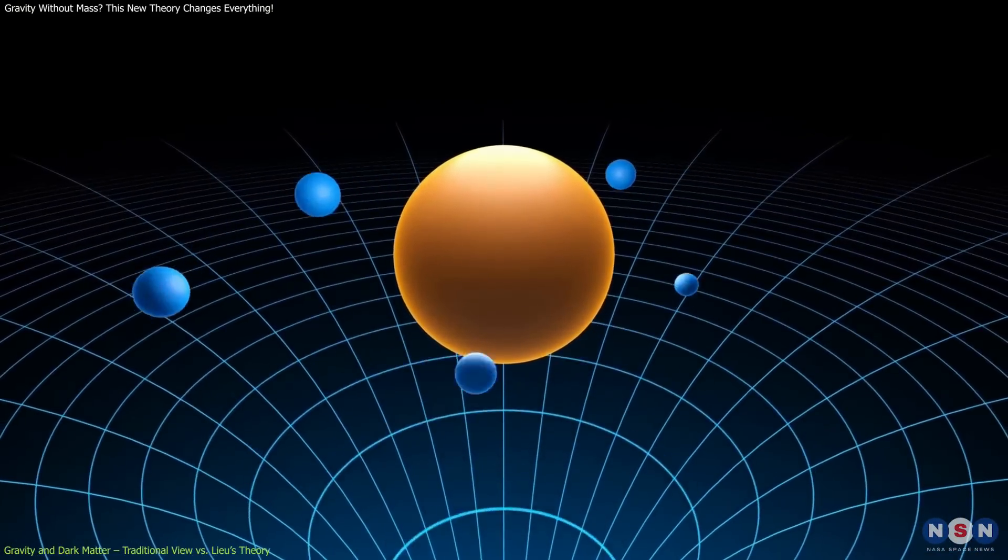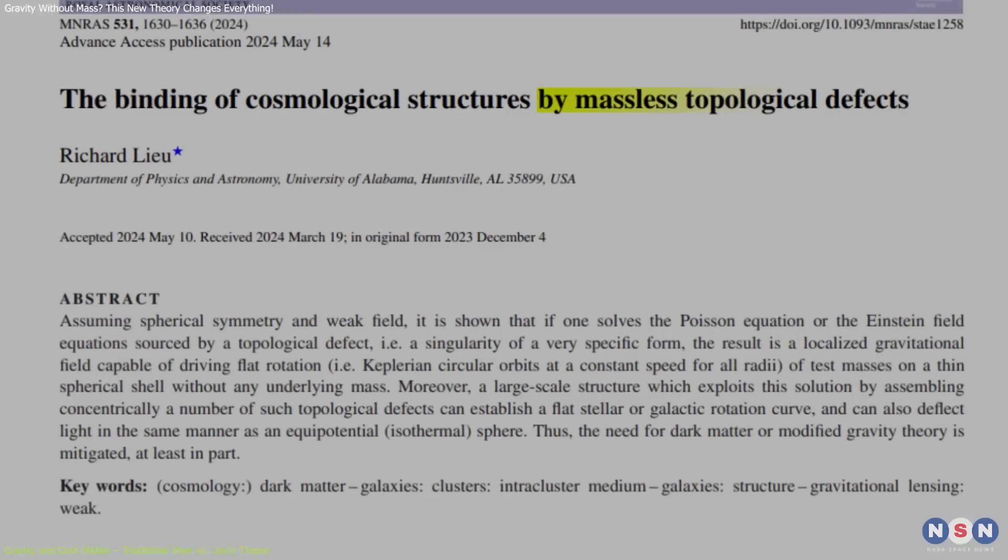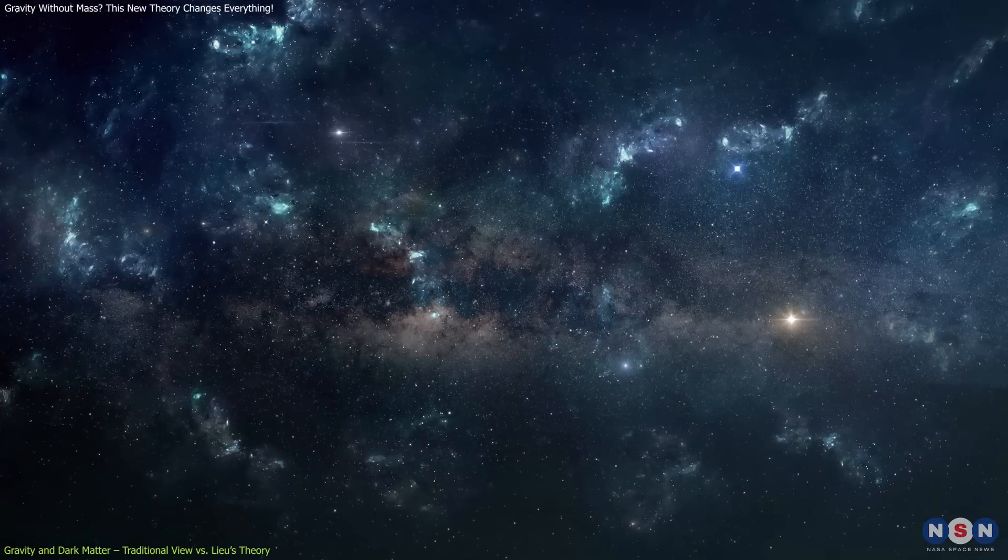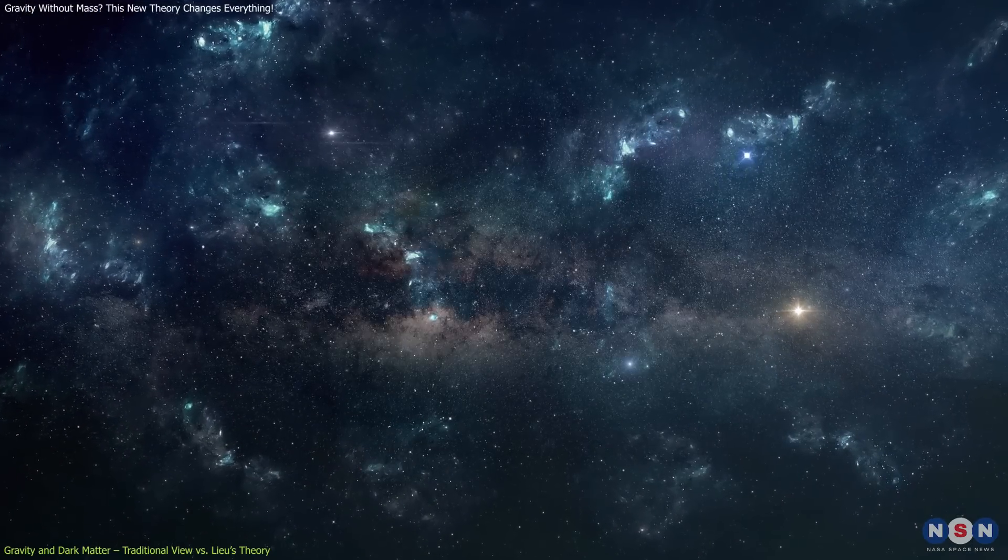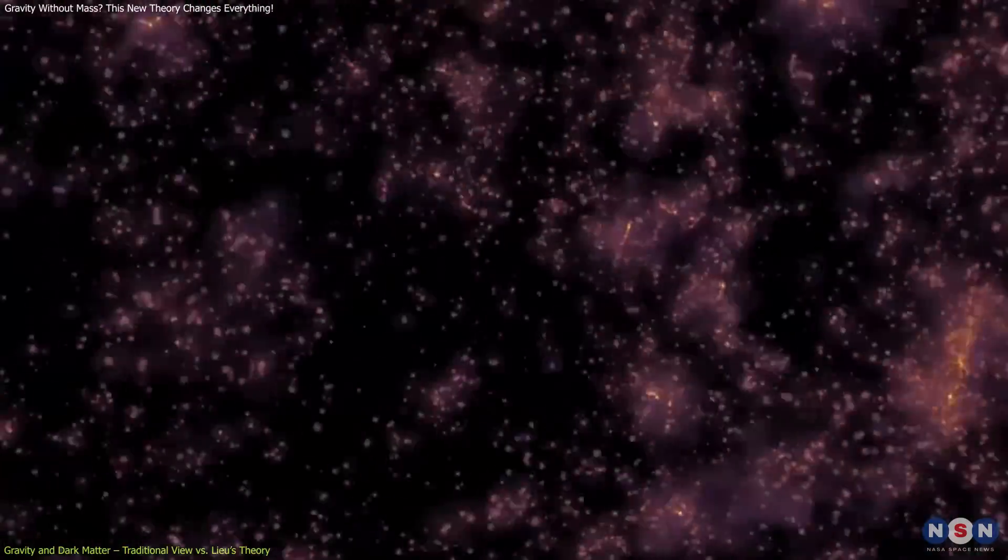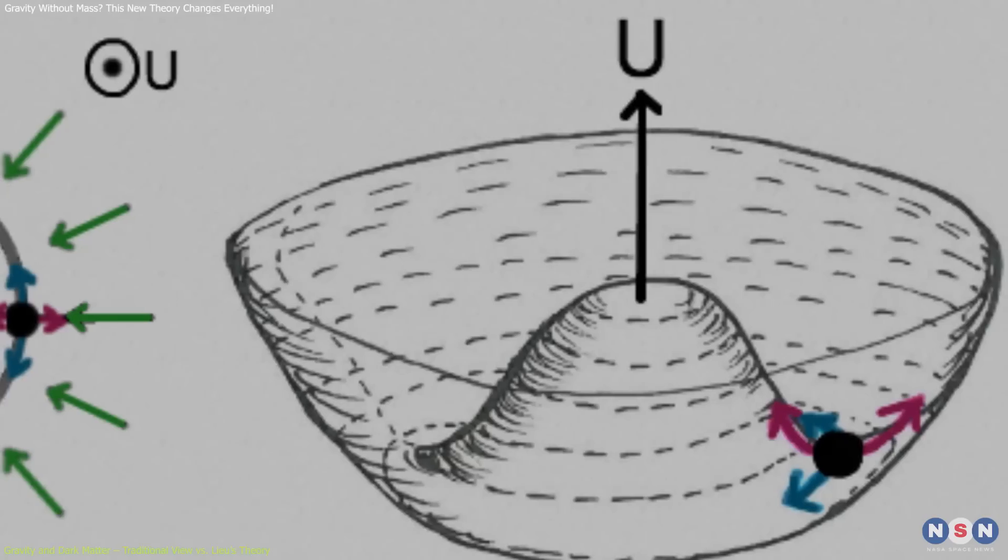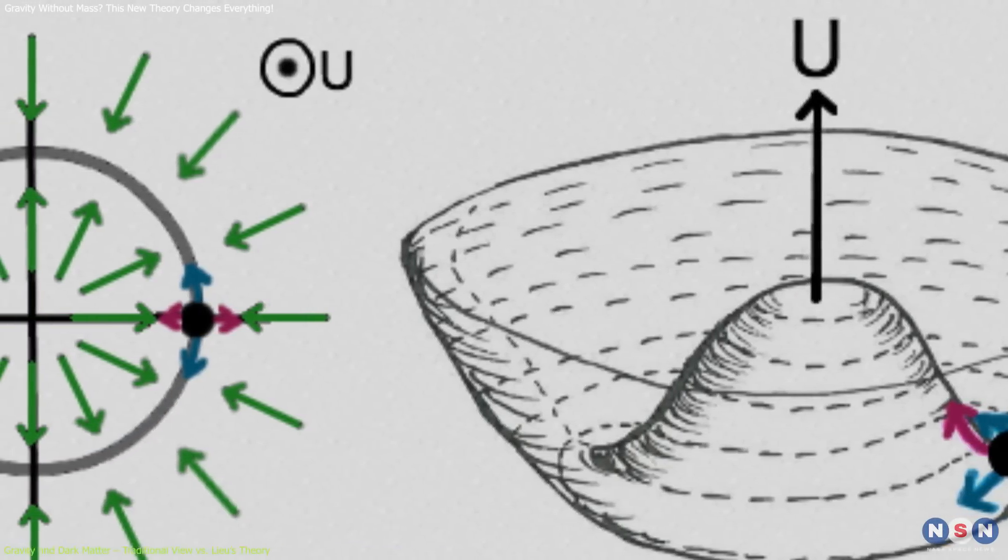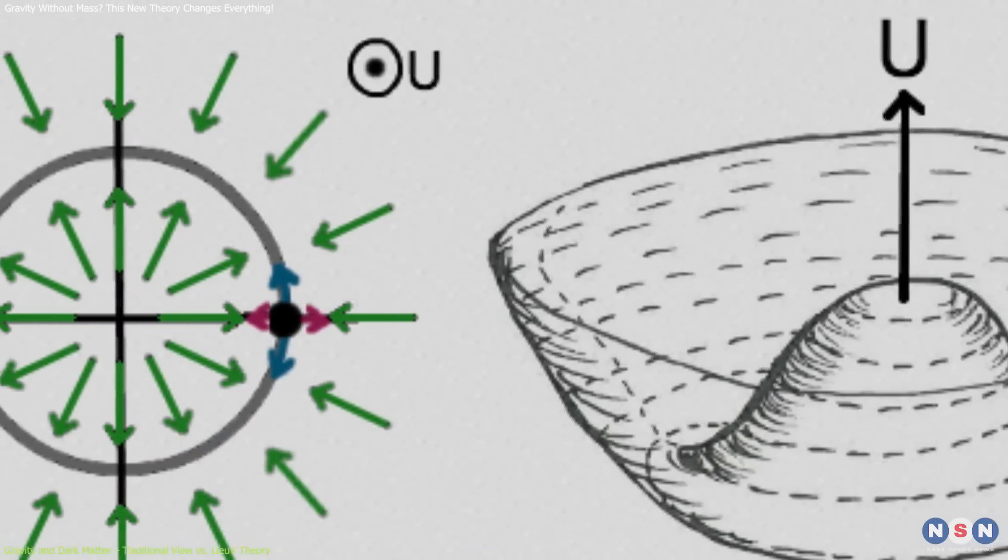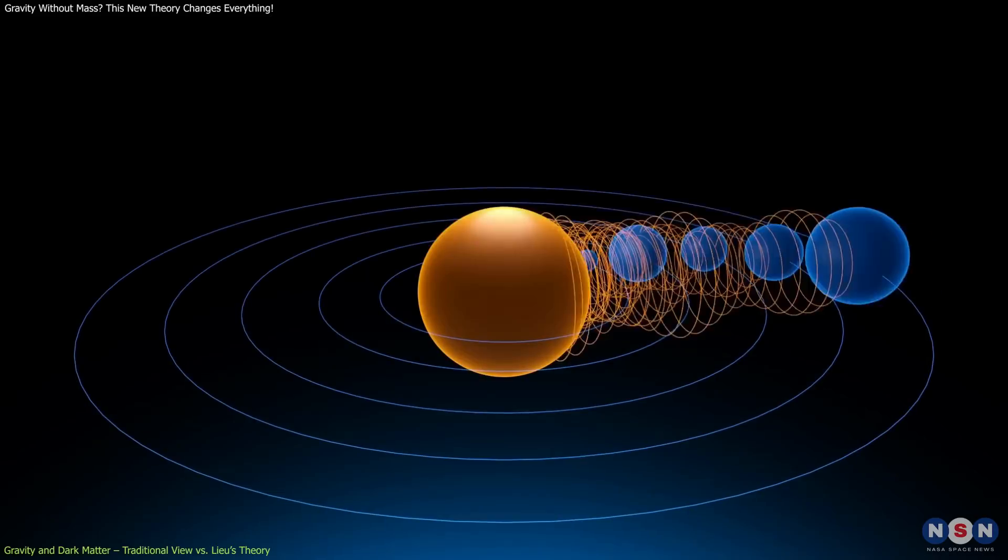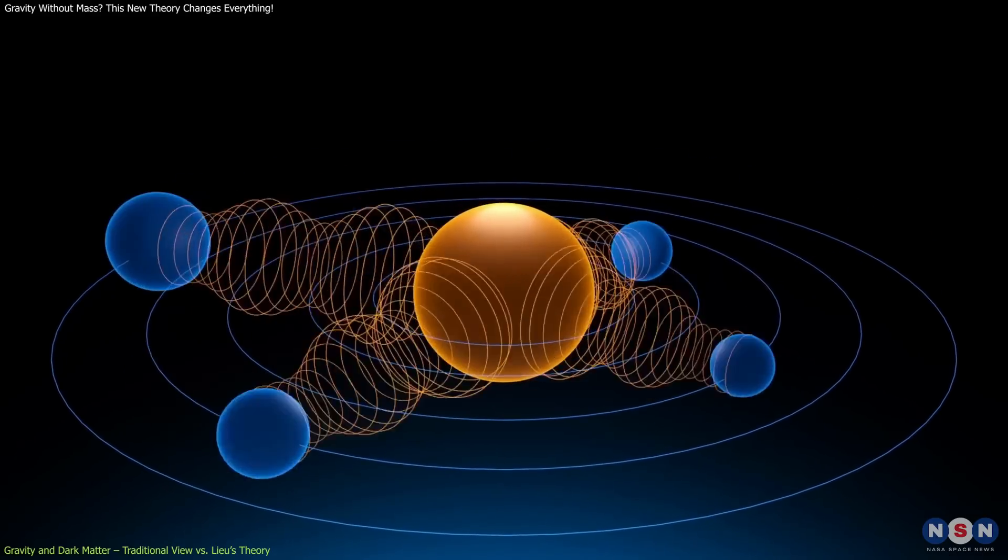Liu suggests that gravity can exist without mass through structures known as topological defects. These are regions in space where the properties of the universe change abruptly, potentially formed during phase transitions in the early universe. Liu proposes that certain shell-like topological defects, consisting of an inner layer of positive mass and an outer layer of negative mass, could create gravitational effects without net mass.